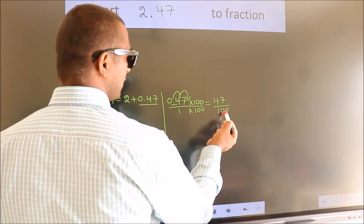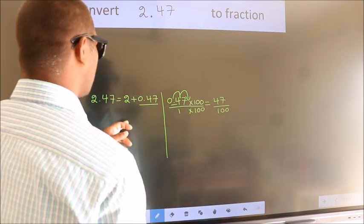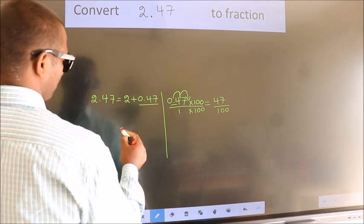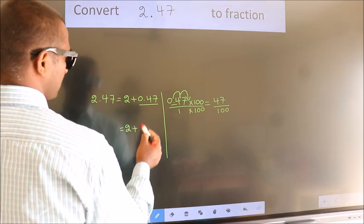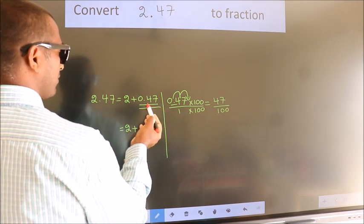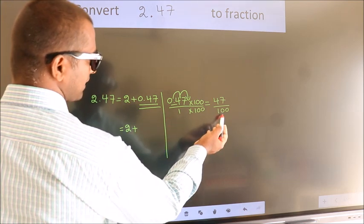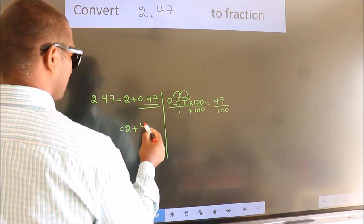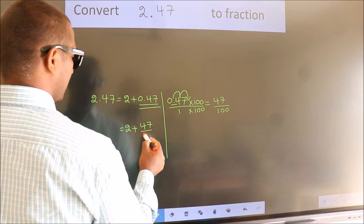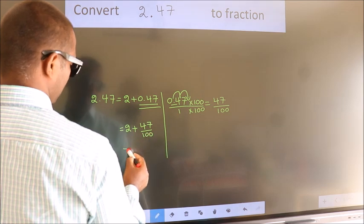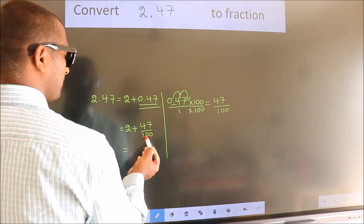This is the fraction we got. Now here, 2 plus in place of 0.47, we write this fraction 47 by 100. So 2 plus 47 by 100.